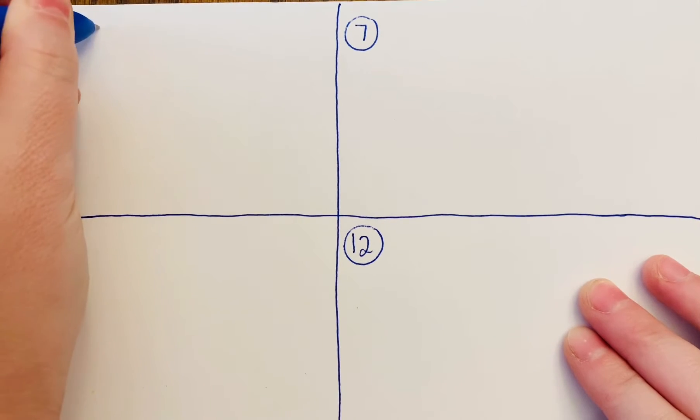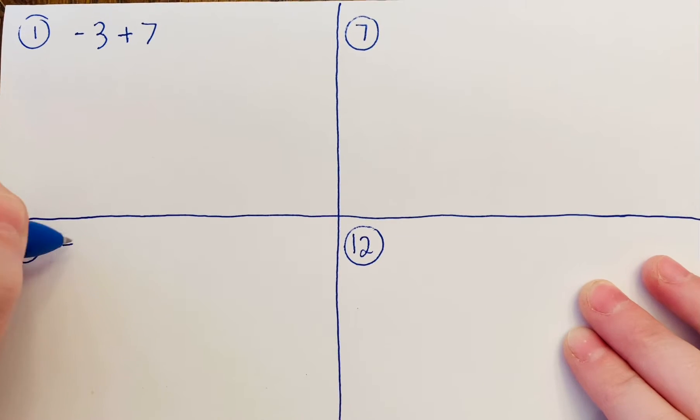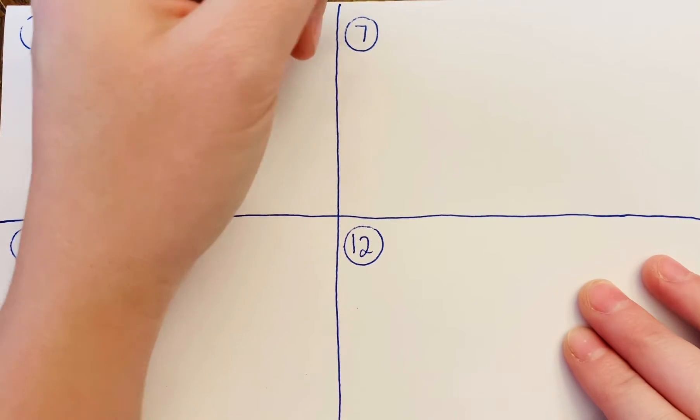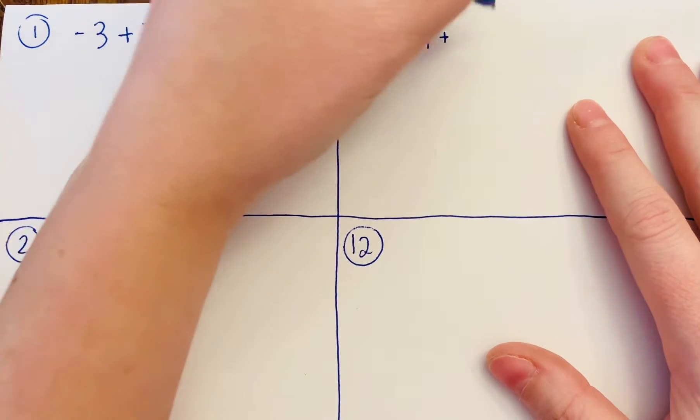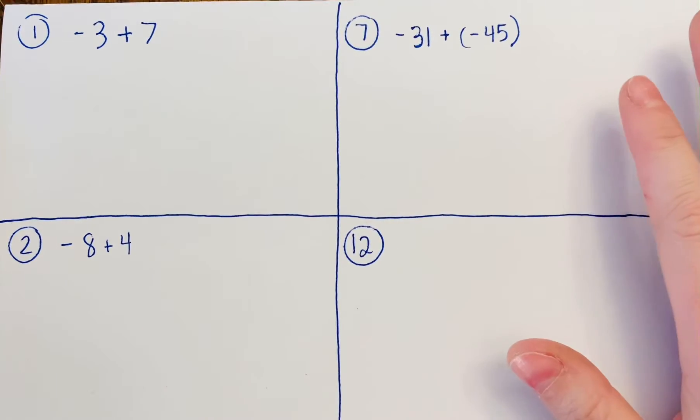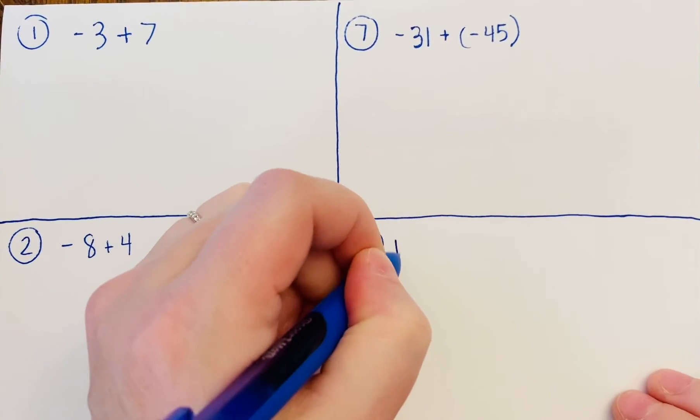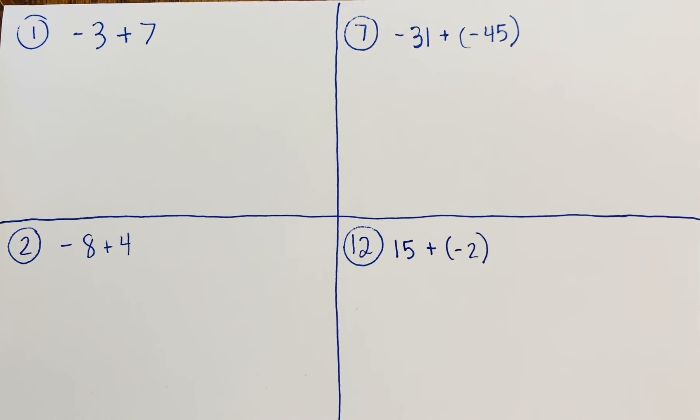I'll solve number 1: -3 + 7; number 2: -8 + 4; number 7: -31 + (-45); and number 12: 15 + (-2). There are 15 problems on the assignment, so if you watch this video you'll have seen 4 out of 15, leaving only 11 for you to do.